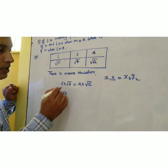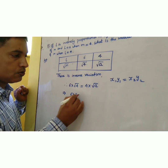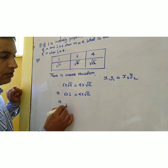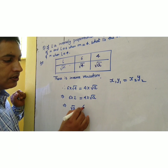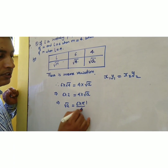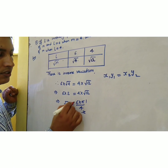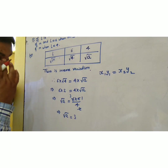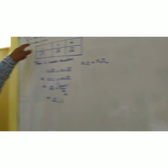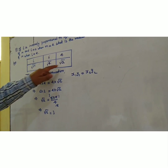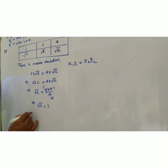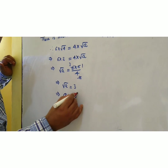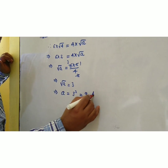Since √4 = 2, we have 6 × 2 = 4 × √A, which gives √A = 12/4 = 3. Since m = A and √A = 3, then A = 3² = 9. The required value of m is 9.